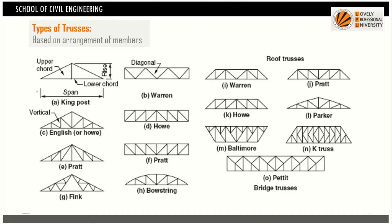We will continue with types of trusses. These are some of the commonly used trusses: king post truss, Pratt truss, Warren truss, and Fink truss, which is commonly used in industrial sheds. Pratt truss is also very commonly used. Most of these trusses are commonly used in practice.